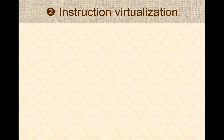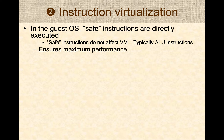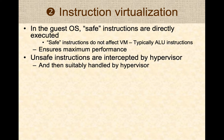The next feature the hypervisor manages is instruction virtualization. The guest operating system can run different kinds of instructions, and certain types are considered safe instructions — instructions that do not affect the state of the virtual machine. These are typically arithmetic and logic unit instructions: addition, subtraction, multiplication, division, compare, jump. Safe instructions do not affect devices, memory, or state of the virtual machine, and they are directly executed on the CPU to ensure maximum performance for the guest operating system.